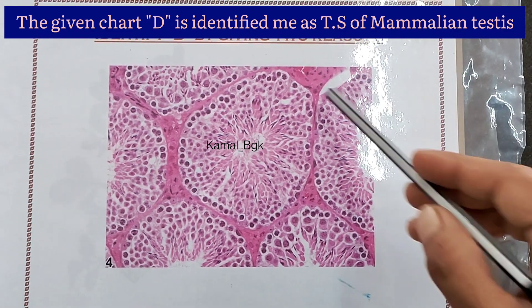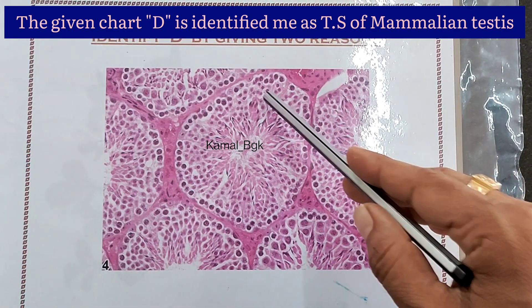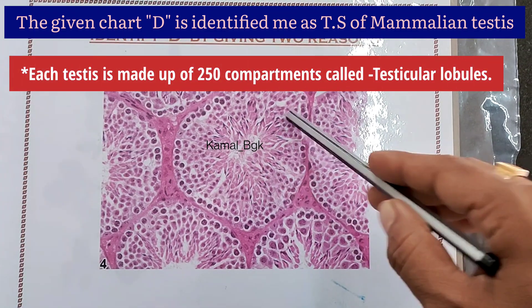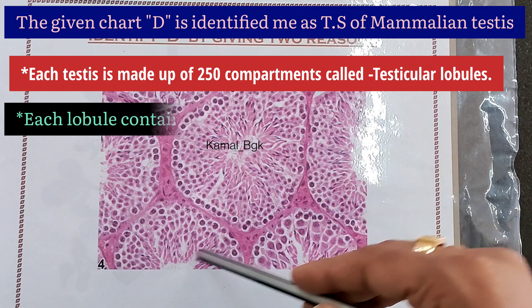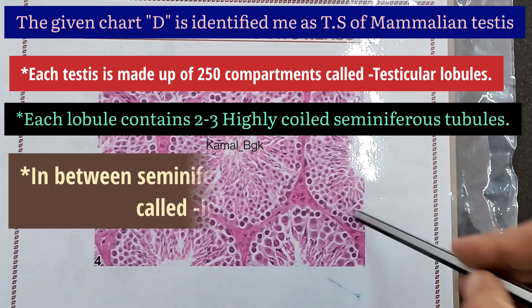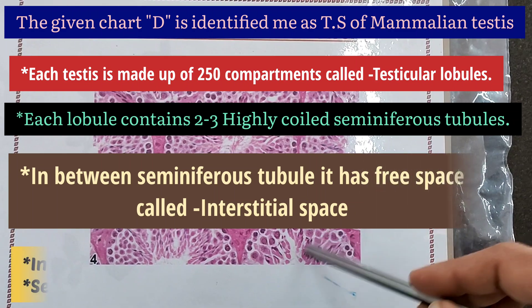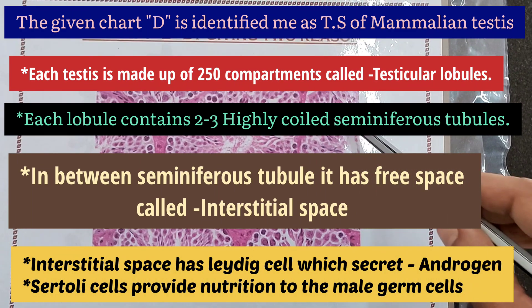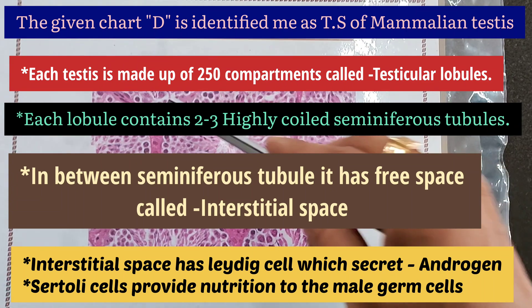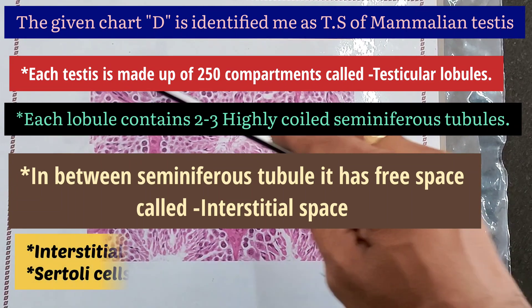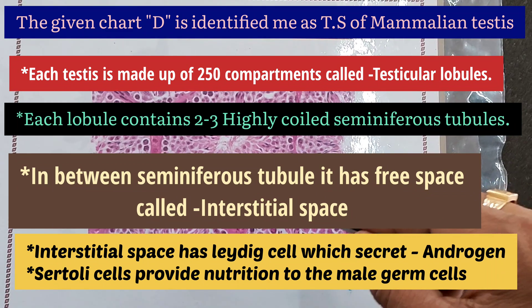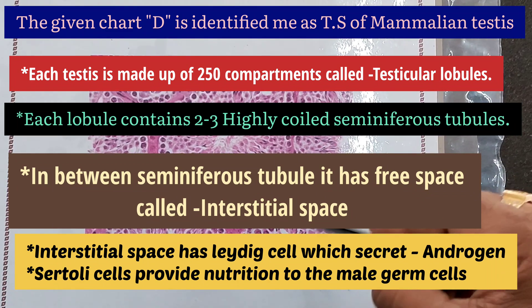The given chart D is identified as TSF mammalian testis. Each testis is made up of 250 compartments called testicular lobules. Each lobule contains two to three highly coiled seminiferous tubules. In between seminiferous tubules, there is a free space called interstitial space. Interstitial space has Leydig cells which secrete male sex hormone called androgen, and Sertoli cells which provide nutrition to the male germ cells.